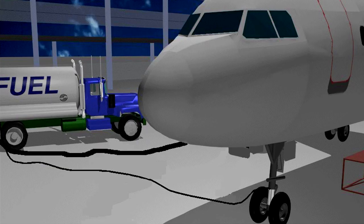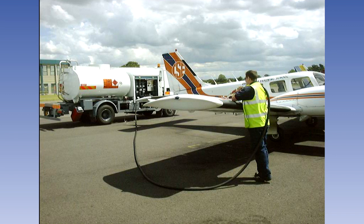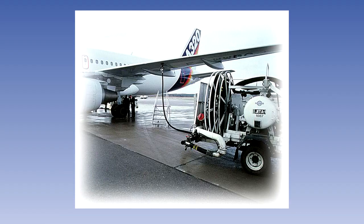Before refueling commences, the aircraft must be bonded to the fueling equipment using dedicated wires and clips. This ensures that there is no electrical potential difference between the components which could lead to sparks. Reliance must not be placed upon conductive hoses for effective bonding. When overwing refueling, the hose nozzle must be bonded to the aircraft structure before removing the tank filler cap. Similarly, any funnels, filters or cans that are used must be bonded to the aircraft. Plastic funnels or pipes must never be used. When underwing pressure refueling, the mechanical metal to metal contact between the aircraft fitting and the nozzle end eliminates the need for a separate hose end bonding cable.